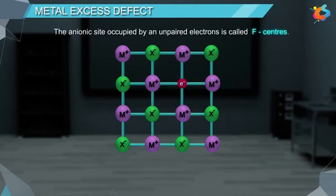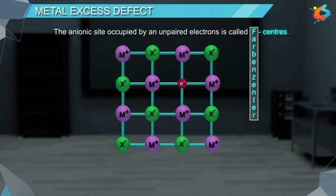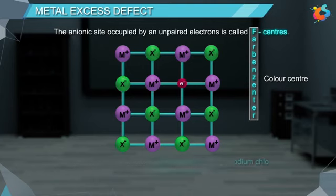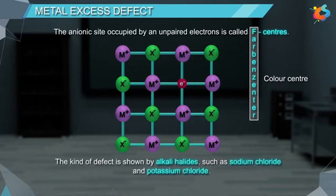The anionic site occupied by an unpaired electron is called F-centers, where F stands for Farbenzinter, which is a German word for color center. F-centers are responsible for the color of the compound. This kind of defect is shown in alkali halides such as sodium chloride and potassium chloride.